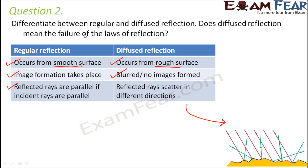The laws of reflection are never a failure — they hold true for all types of surfaces. It is just that in case of a rough surface, the normal drawn at each point is different. If you draw the normal at one point it will go in one direction, and at another point it will go in a different direction. Since the normal is different for each point, the reflected ray goes in a different direction. But at each of these points, the laws of reflection are true.